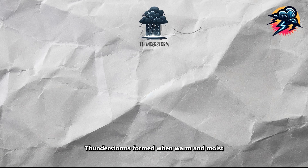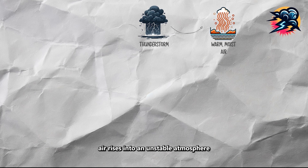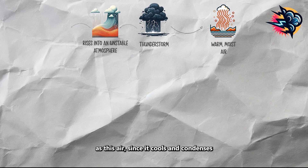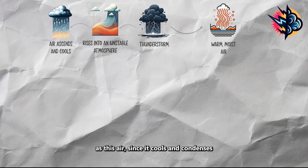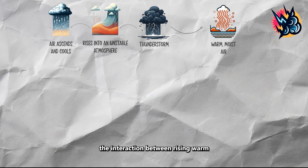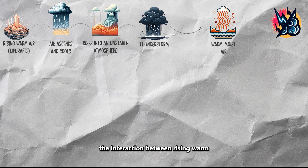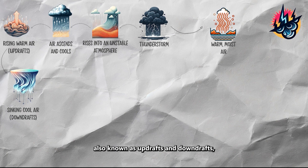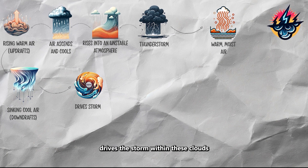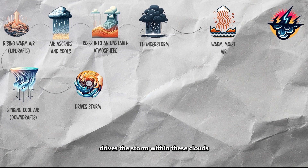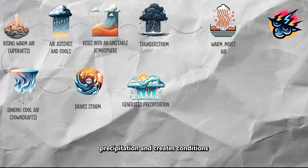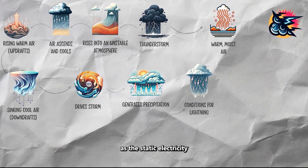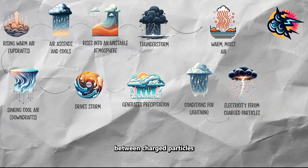Thunderstorms form when warm, moist air rises into an unstable atmosphere. As this air ascends, it cools and condenses into storm clouds. The interaction between rising warm air and sinking cool air, also known as updrafts and downdrafts, drives the storm within these clouds. This process generates precipitation and creates conditions for lightning, as static electricity builds up from friction between charged particles.